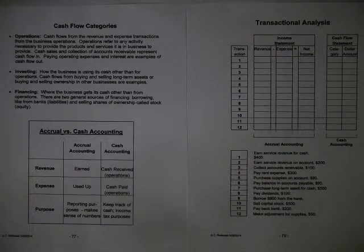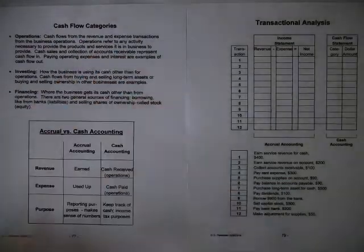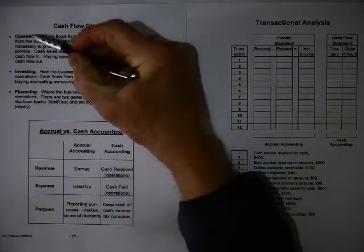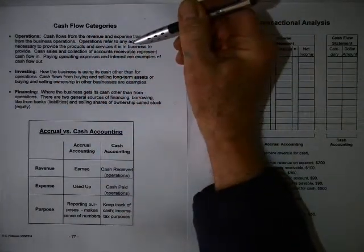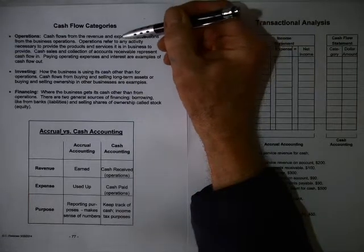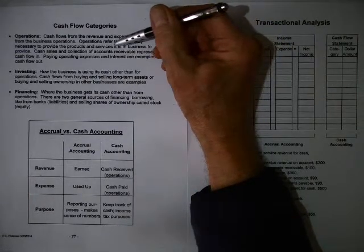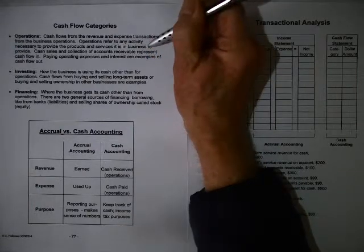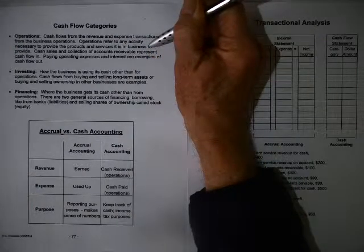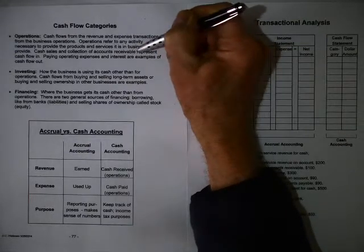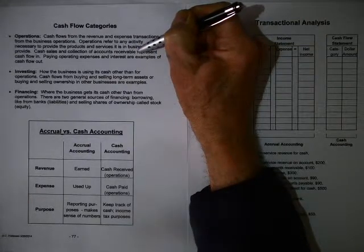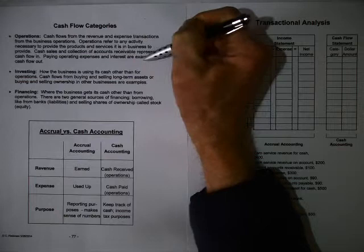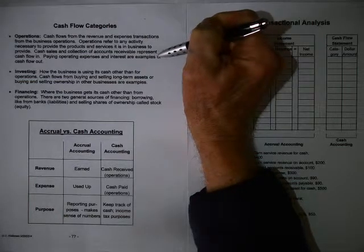Now cash flow is divided up into three categories, operations, investing, and financing. Now operations has to do with your reason for being in business. It represents the cash flow categories for revenues and expenses that the business encounters. And remember these are cash flow now. Cash sales and collections of accounts receivable represent cash in. Paying operating expenses and interest expense are examples of cash flow out.